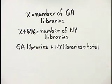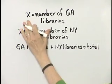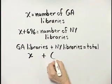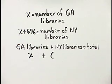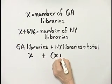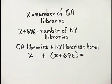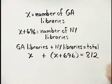And then let's translate to an equation. The number of Georgia libraries, which we've let be X, plus the number of New York public libraries, that is X plus 696, is equal to the total for these two states, which is given to us to be 812.